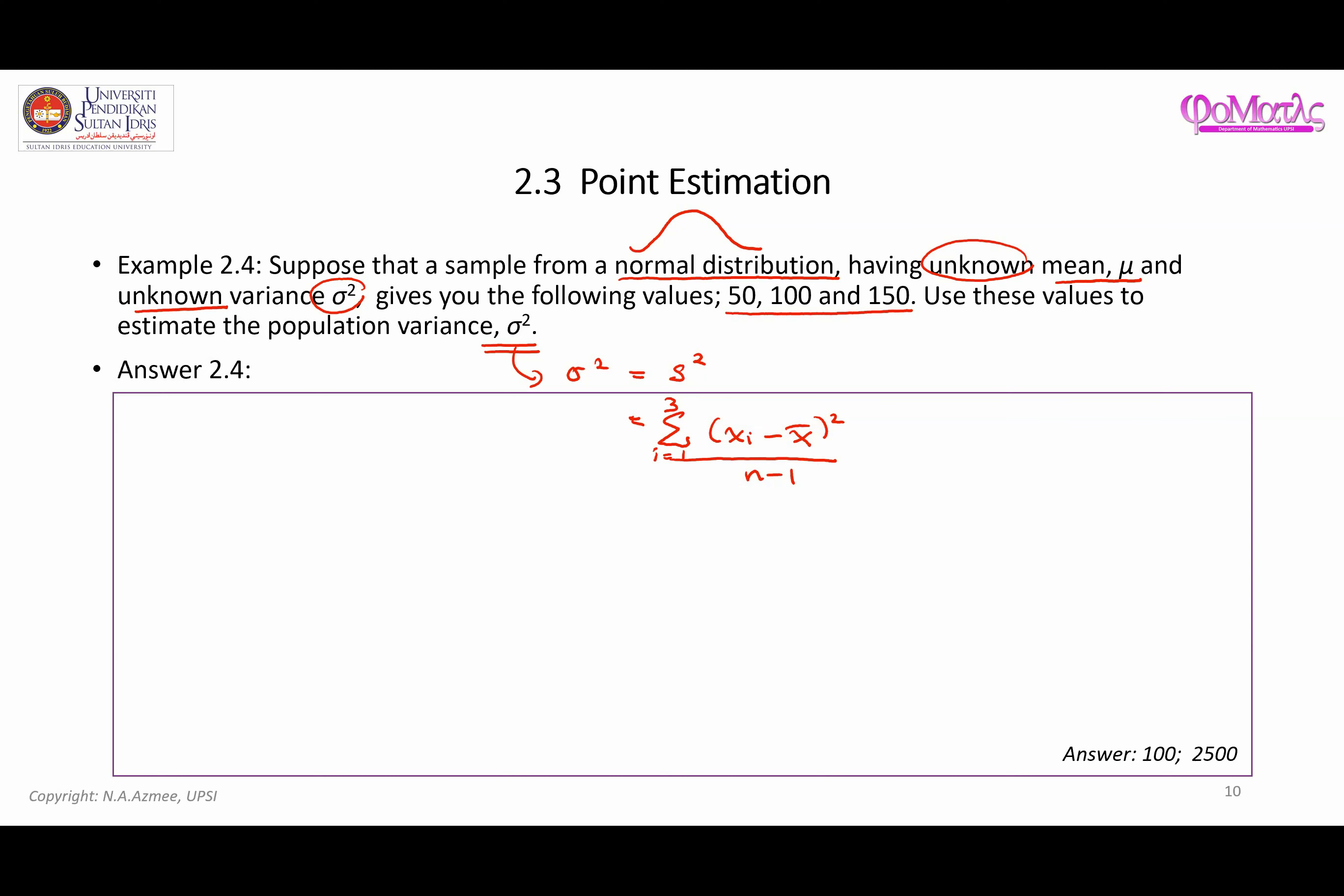So that's what we're going to do. First, we're going to calculate the sample mean. Therefore, x bar is just adding up 50 and 100 and 150, and you divide that with 3.